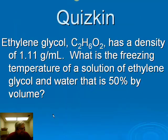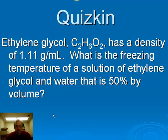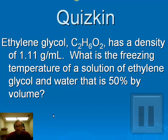First we're going to start out with a couple of quizkins. This quizkin tells us that we have ethylene glycol with a density of 1.11 grams per milliliter, dissolved in water as a 50% by volume solution, and we need to know what the freezing temperature of the solution is.